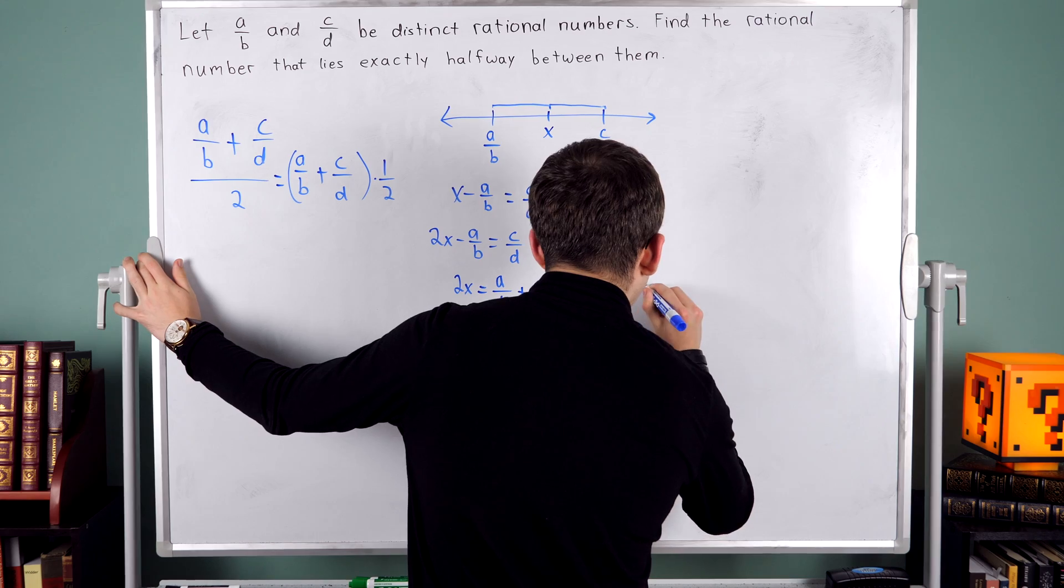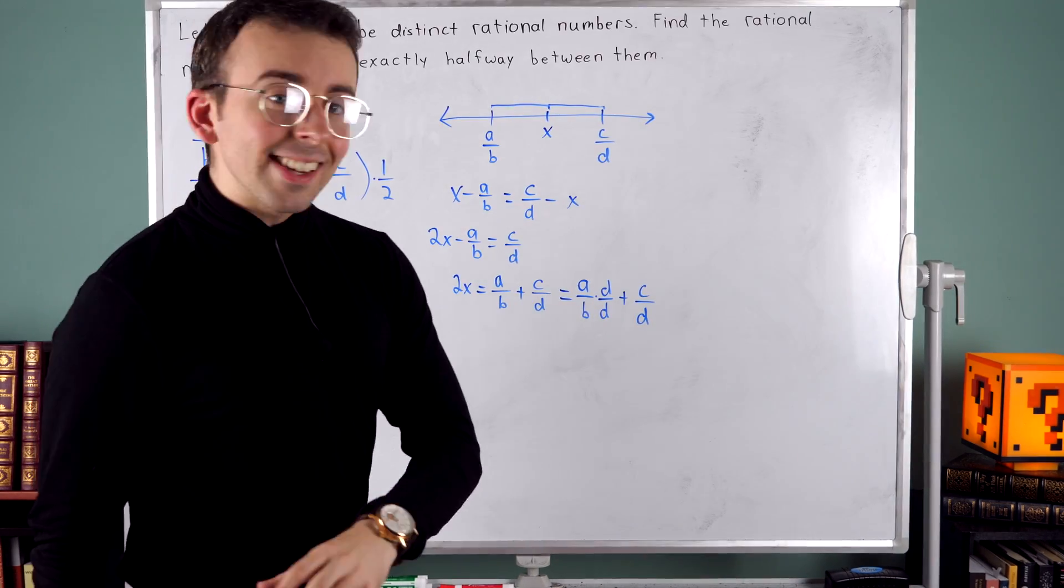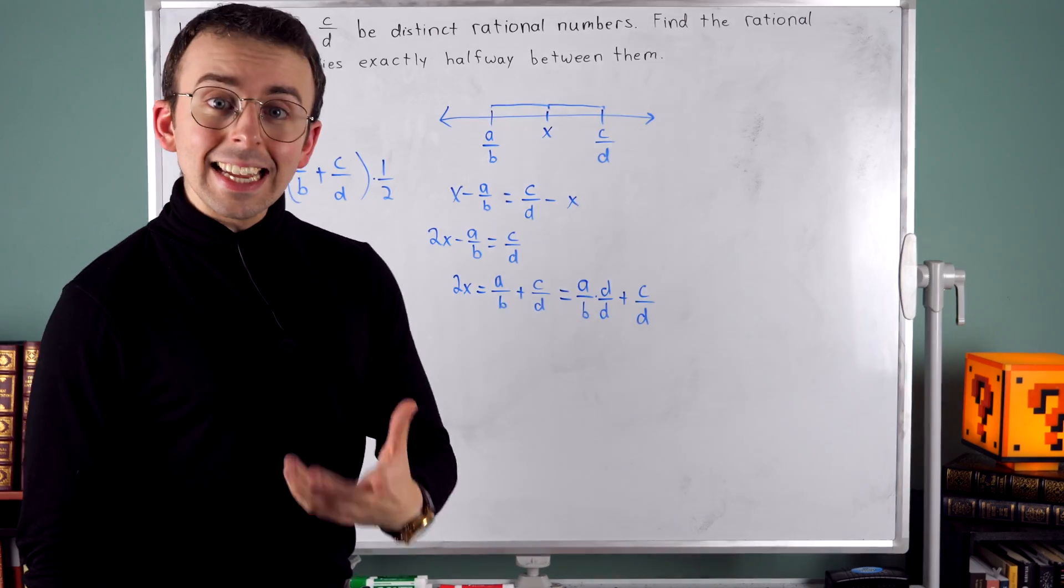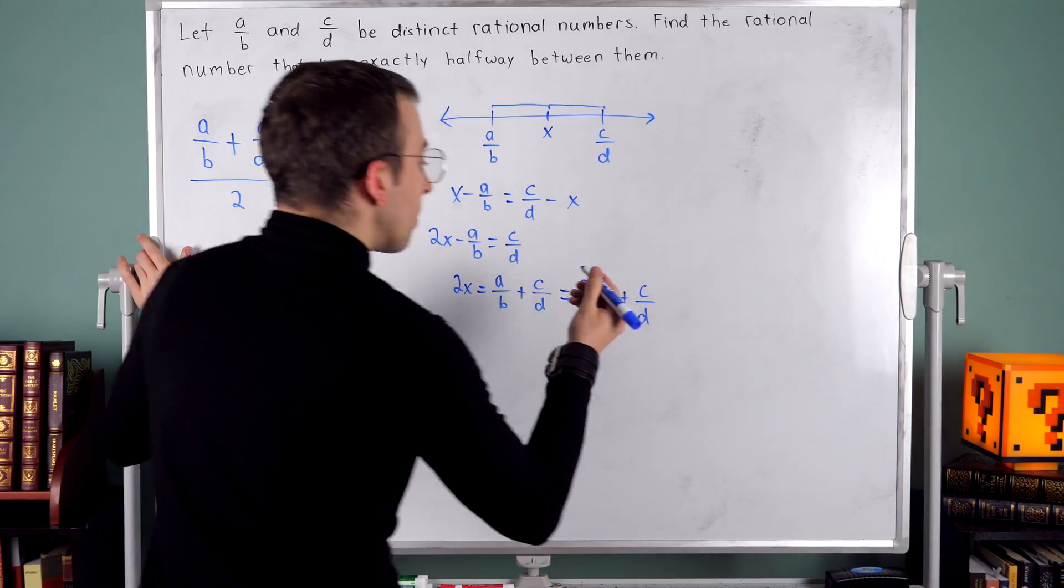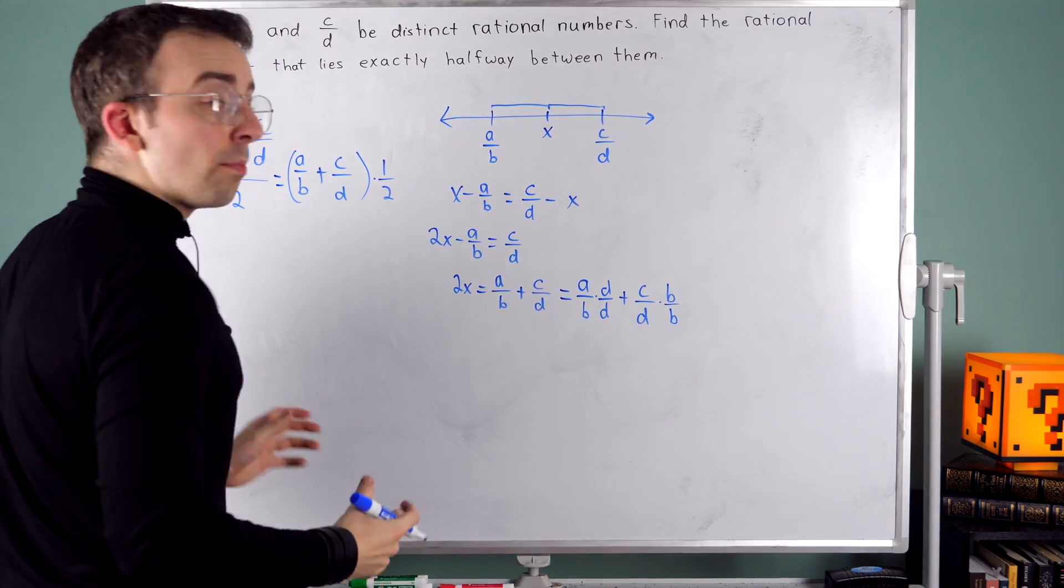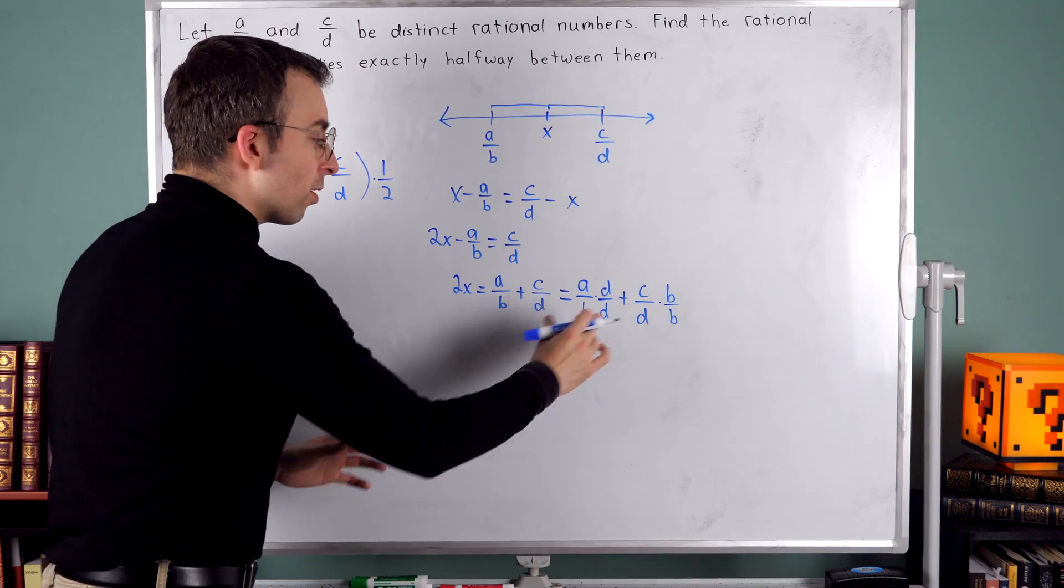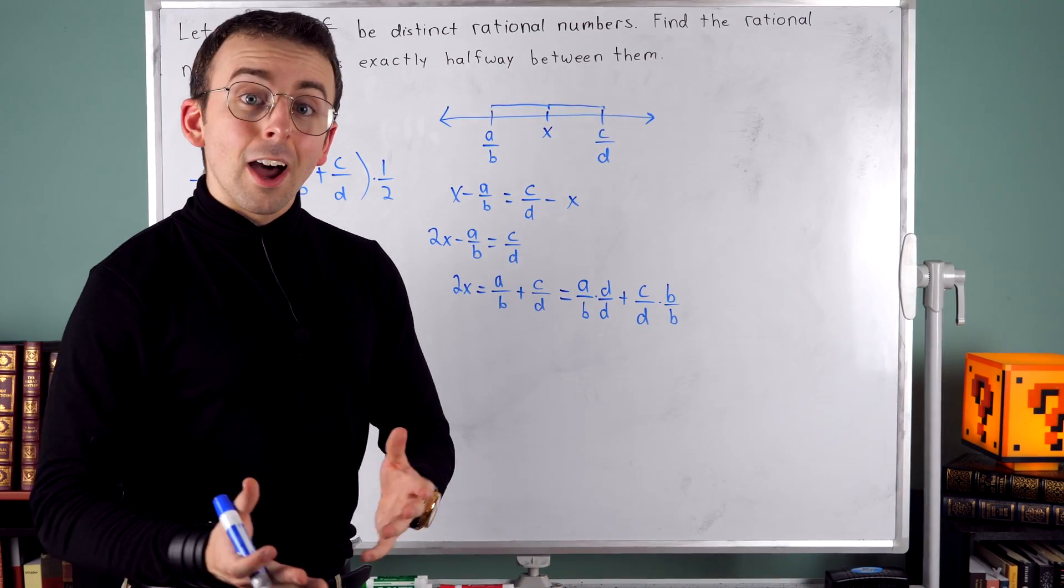Similarly, for C over D, I would like it to have a B in its denominator. So I'm going to multiply it by B over B. Again, that's a multiplication by one. So it doesn't change it. It just changes the expression of the denominator.